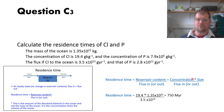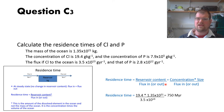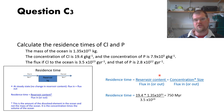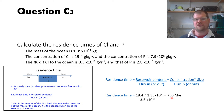So your answer should be to two significant figures. In this case the residence time of chlorine in the ocean is 750 million years — not 747,899,000 or whatever. Your data in is to two significant figures, so your answer should be to two significant figures.